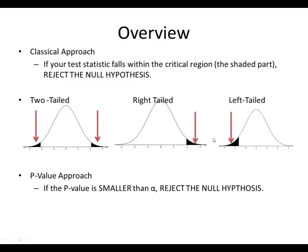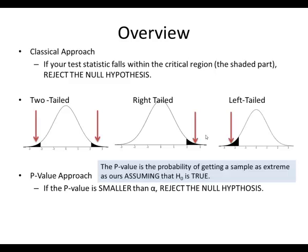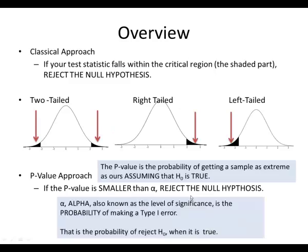For the p-value approach, if the p-value is smaller than alpha, then we reject. The p-value is the probability of getting a sample as extreme as the one found in our experiment, assuming that the null hypothesis is true. So if that probability is very small, we have to reject the null hypothesis. Alpha is our significance level — it's the probability of making a Type 1 error.